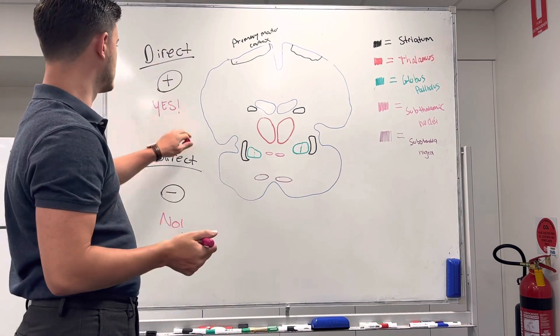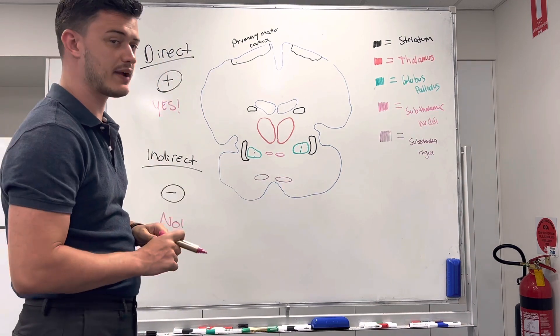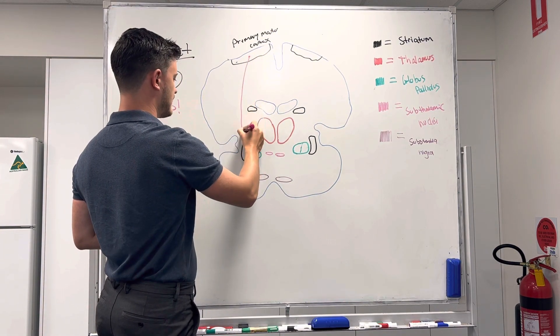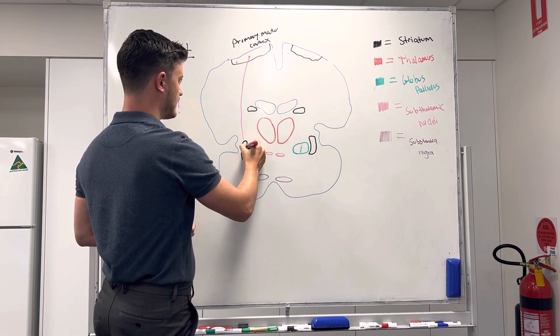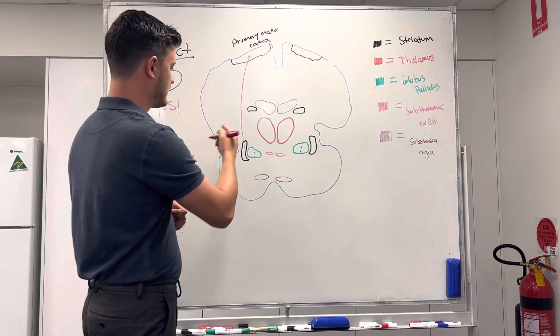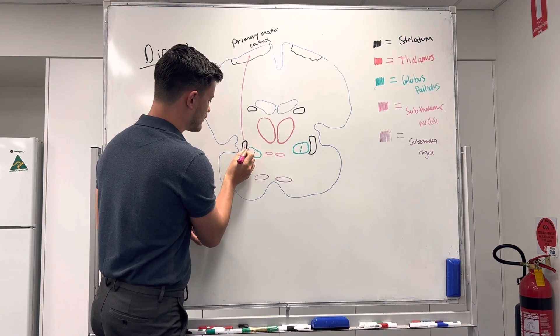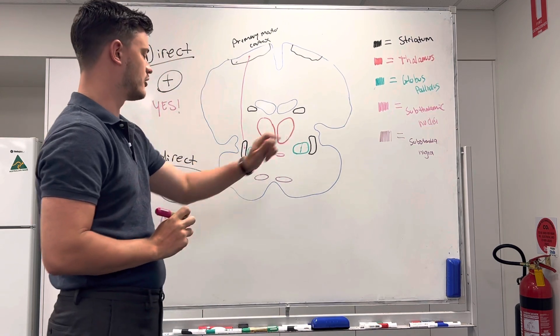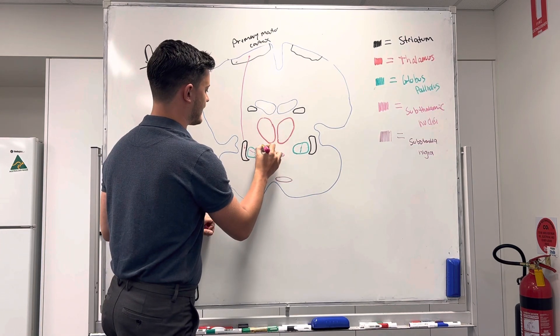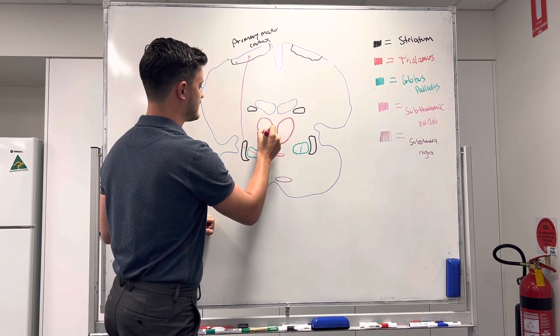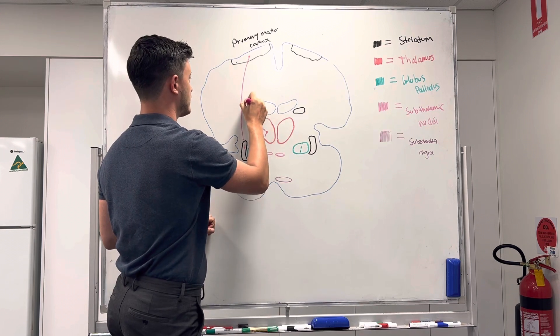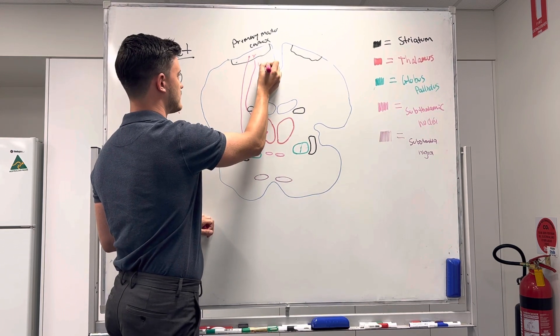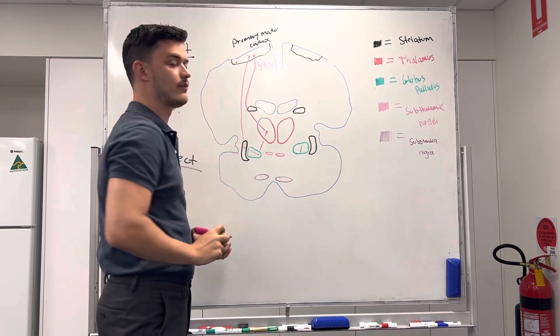I'm going to use this pink marker here to demonstrate whereabouts this direct pathway goes through. So, it starts, of course, in the primary motor cortex. It comes on down and it actually synapses in the striatum, the black part, yeah? In this case, the putamen. So, then travels over into the internal segment of the globus pallidus, and then travels back up to the thalamus, synapses there, and then it comes on back, all the way back to the primary motor cortex, and it says to itself, yes, I can perform that movement, and that's really important.